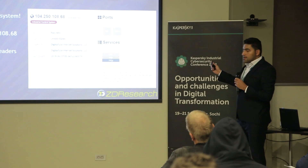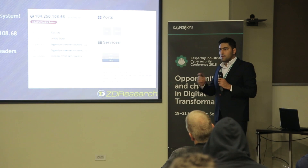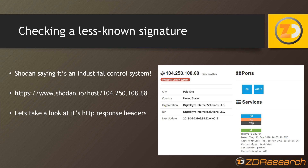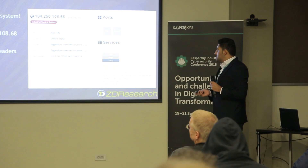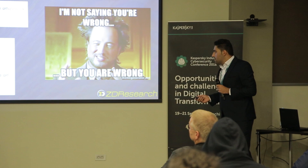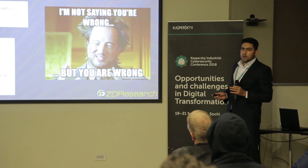This screenshot is from Shodan. Shodan has a feature called Honey Score, and if it detects a honeypot, it shows a 'honeypot' tag. Looking at the Conpot configuration file and comparing it with the response in Shodan, you can see they match — confirming it is not a real industrial control system but a honeypot.